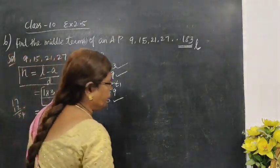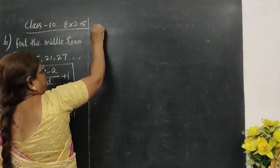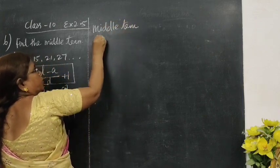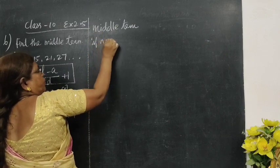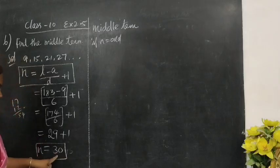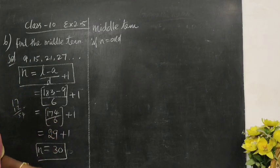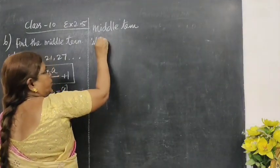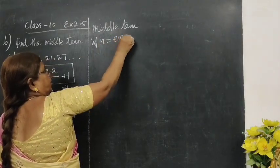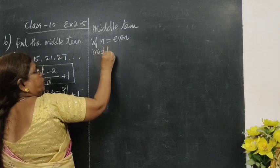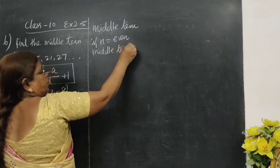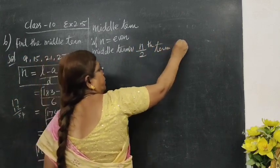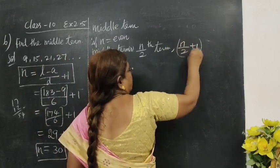Now, 30 is even. The question is, middle term is the middle term. Then, the formula: If n is even, then there are two middle terms. One is n by 2th term. Another one is n by 2 plus 1th term.